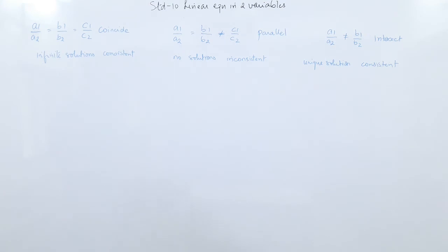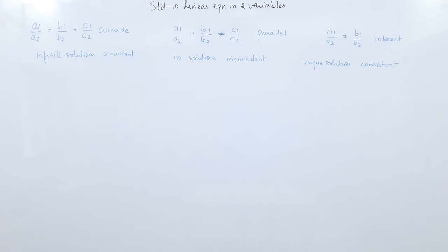First understand these three conditions. Here, a1, a2, b1, b2, c1, c2 are the coefficients of the equations in two variables. In the first case, if a1/a2 = b1/b2 = c1/c2, the lines coincide and there are infinite solutions — consistent. If a1/a2 = b1/b2 ≠ c1/c2, the lines are parallel, no solutions — inconsistent. If a1/a2 ≠ b1/b2, the lines intersect at one point — unique solution, consistent.